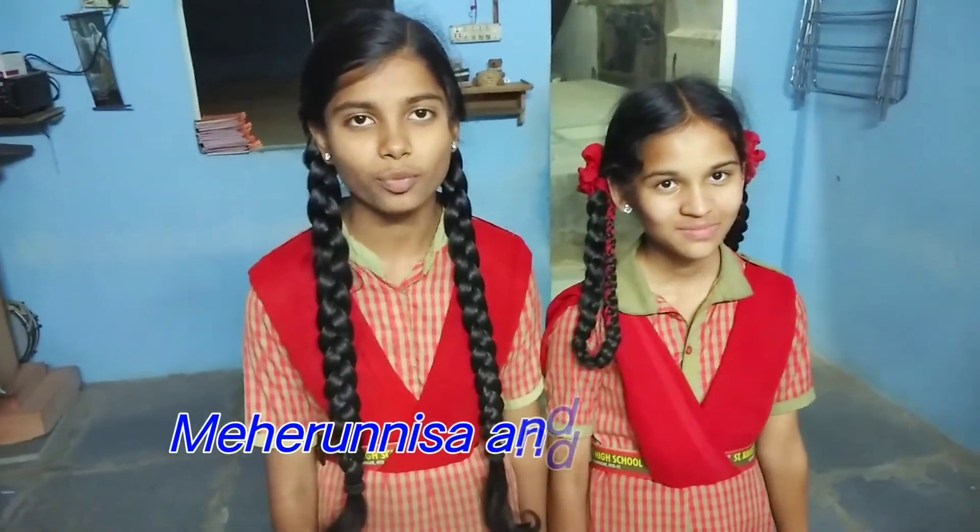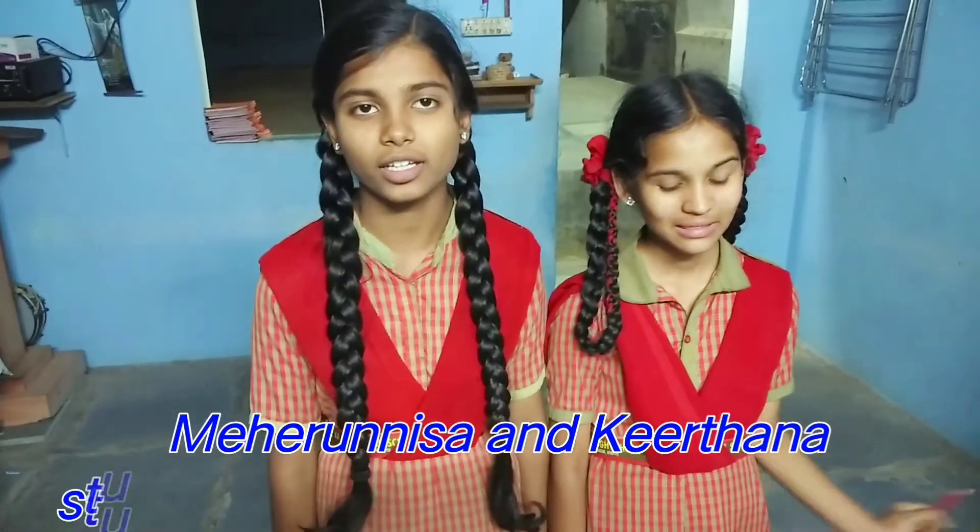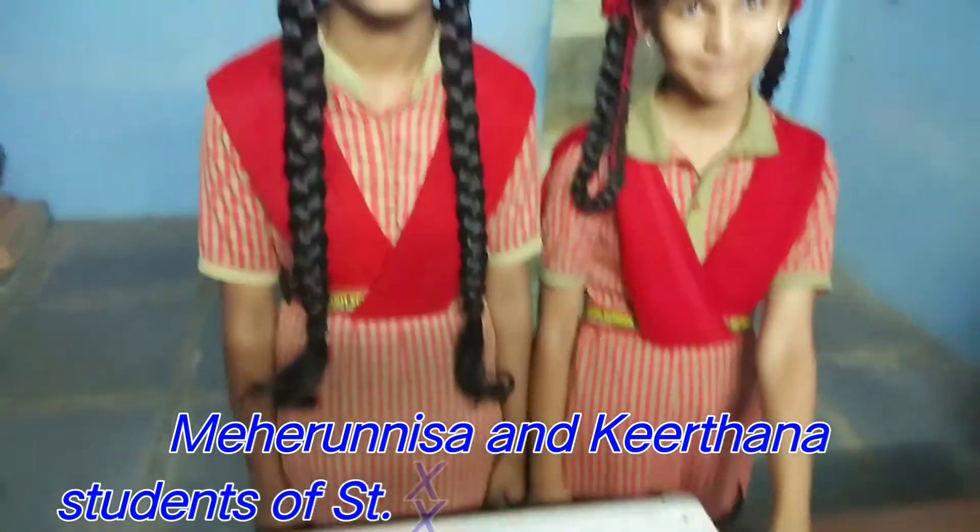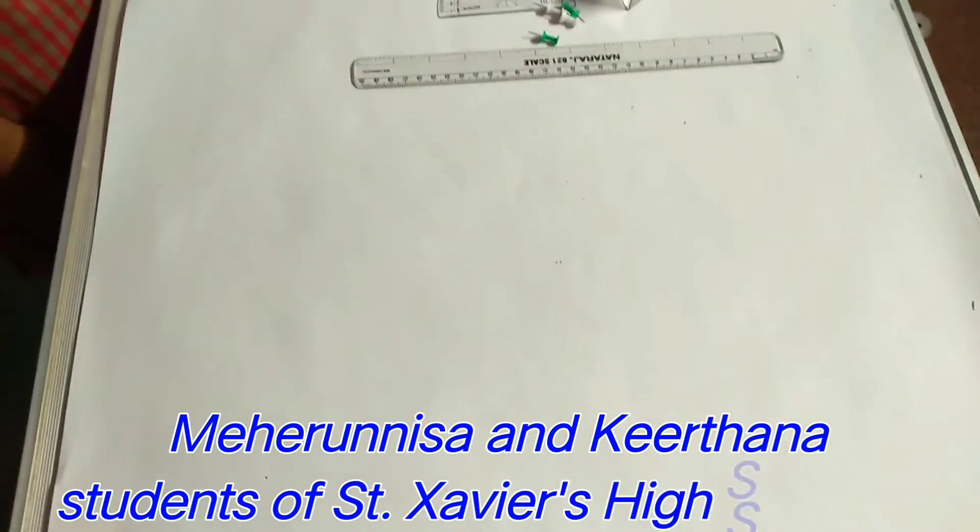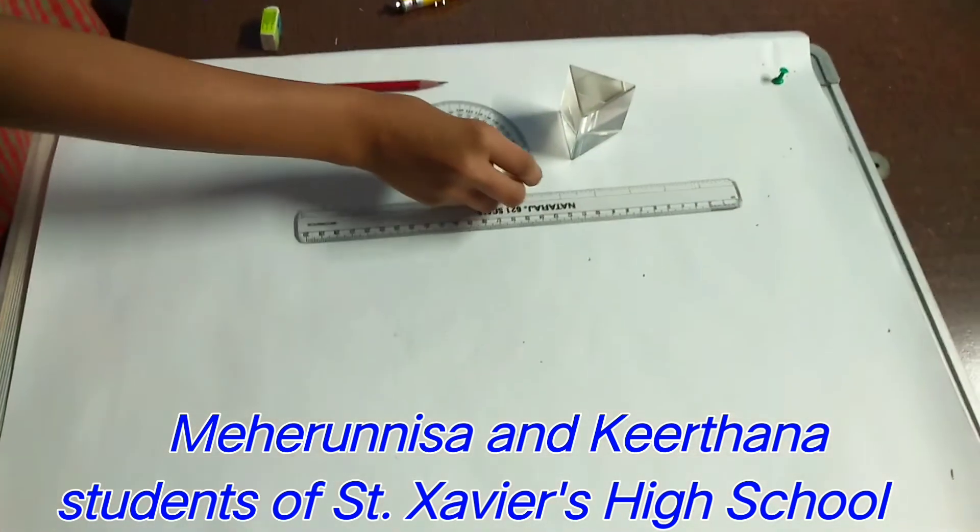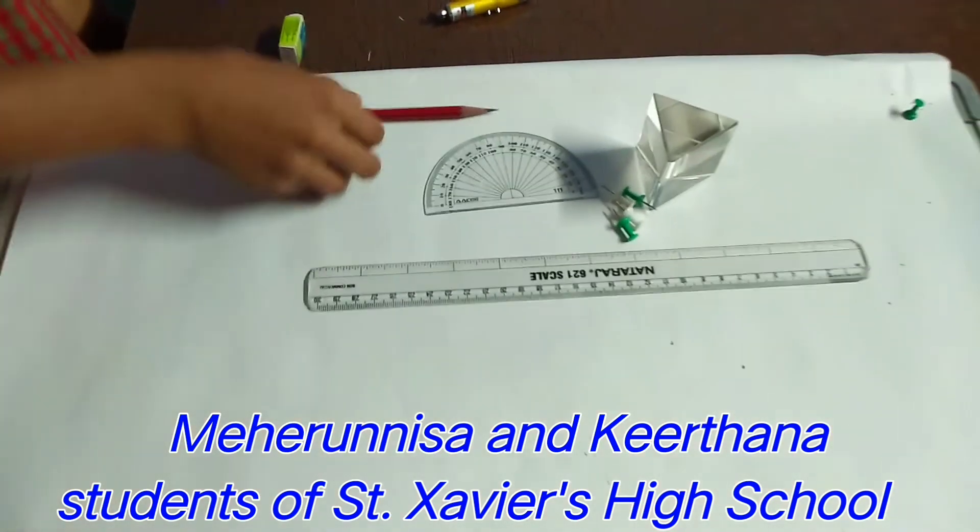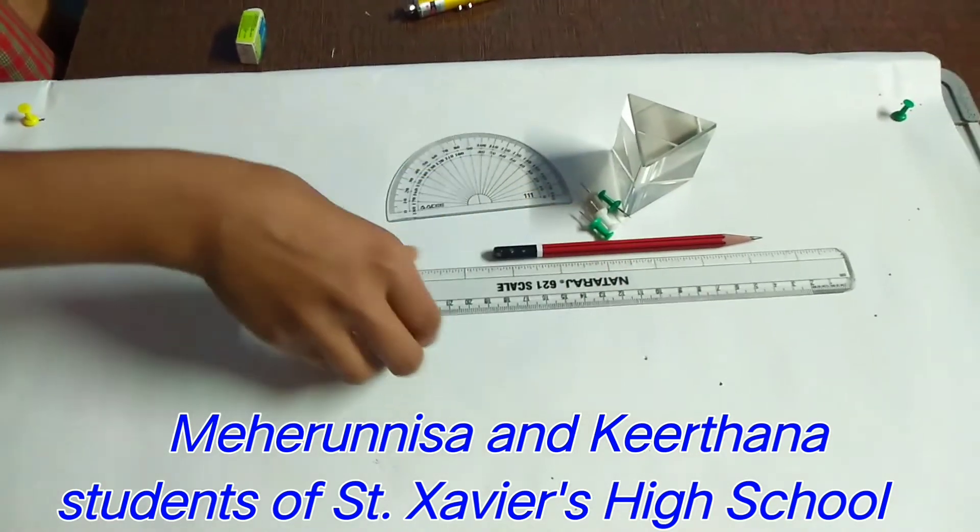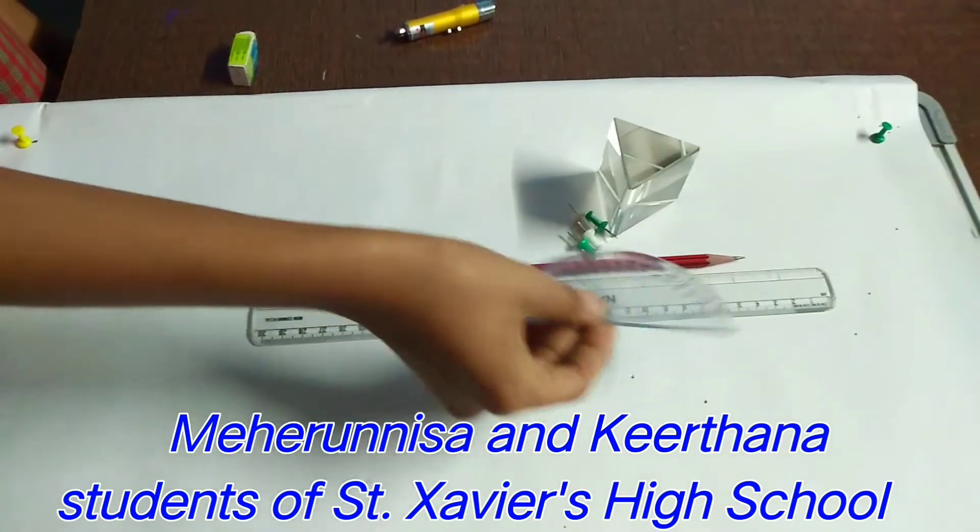We are doing the experiment of prism whose aim is to find the refractive index of prism. Materials required are a prism, some pins, pencil, protractor and a scale.